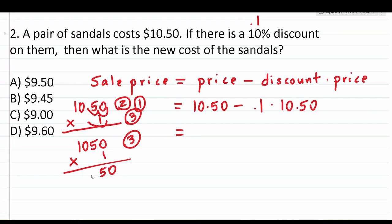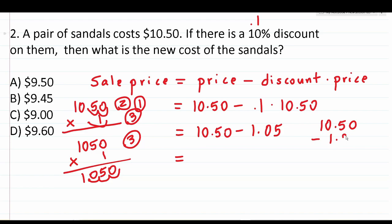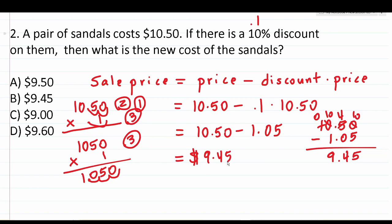So 0.1 times 10.50 equals 1.05. Now we do 10.50 minus 1.05. We can't do 0 minus 5, so we borrow: this gives 10 minus 5 equals 5. Then 4 minus nothing is 4. Drop down the decimal. 0 minus 1 requires borrowing again: 10 minus 1 equals 9. So the sales price of the sandals with the discount applied is $9.45.